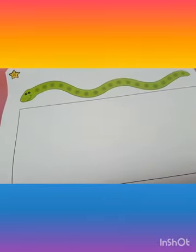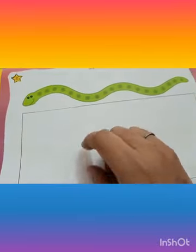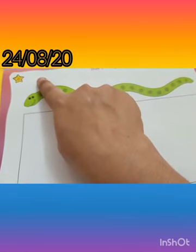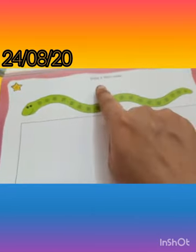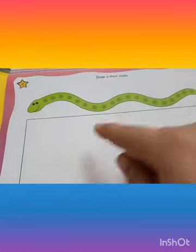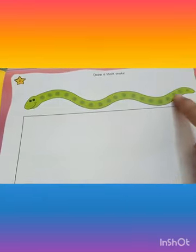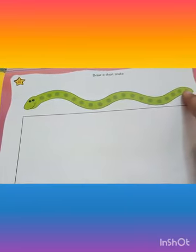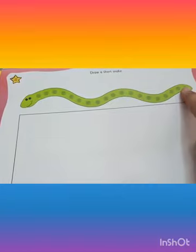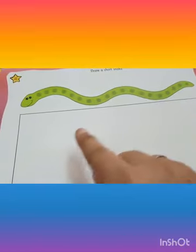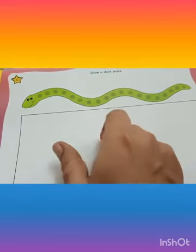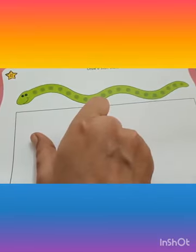Children, first you are going to write the date in the left side corner. The instruction says: draw a short snake. The snake shown is long, so when we want to draw a short snake, the length will be less than this one. We are going to draw a short snake — it means the length will be less.